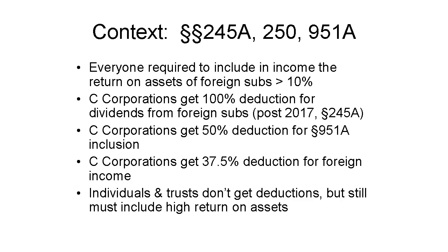For corporations, though, two other brand new sections have an even more radical impact, beginning in 2018. Regular or C-corporations get three special deductions. First, there's a deduction under Section 245A for 100% of dividends they receive from foreign corporations of which they own 10% or more. Thus, foreign subsidiary dividends are tax-free to U.S. corporations. 951A and subpart F mitigate the effect of this, requiring current inclusion of part of the profits of those foreign subsidiaries.